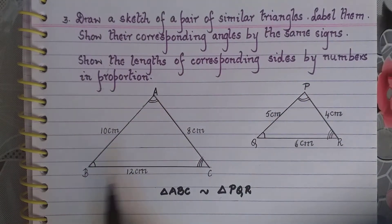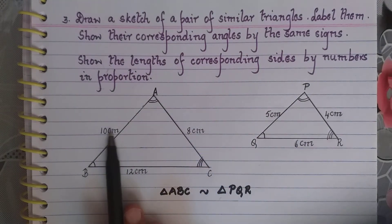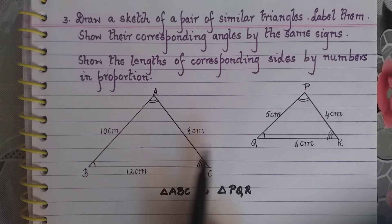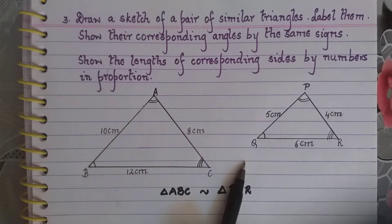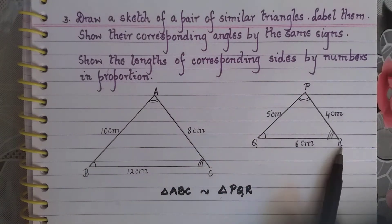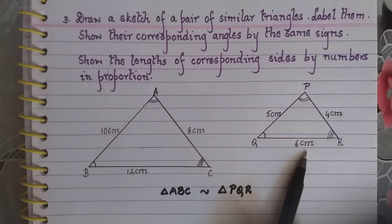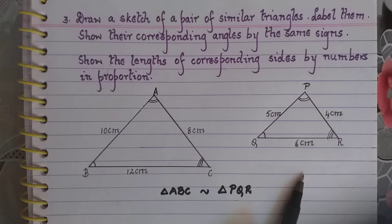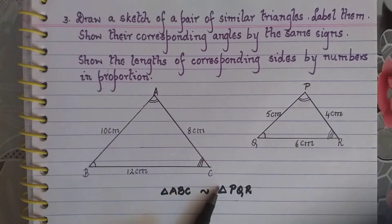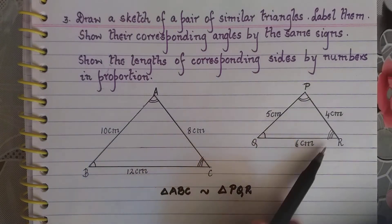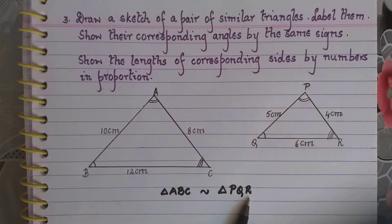Now what is AB upon PQ? 10 upon 5, so 5 goes into 10 two times. So the ratio is 2. Next, BC upon QR is 12 upon 6, that is again 2. And AC upon PR is 8 upon 4, which is again 2.